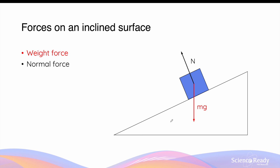However, what changes is that the normal force vector is no longer going upwards. The normal force vector always remains perpendicular to the surface. So because the surface is now inclined at an angle, the normal force will also be inclined at an angle as well.